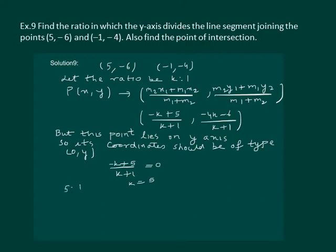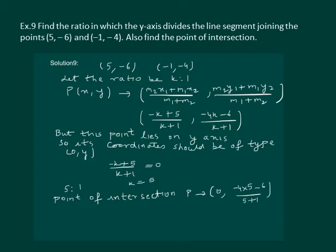Now putting k = 5, we get the point of intersection. Substituting k = 5 into the y-coordinate expression, we get (-4×5 - 6) / (5 + 1), which gives us the coordinates as (0, -13/3).